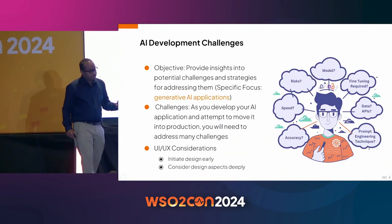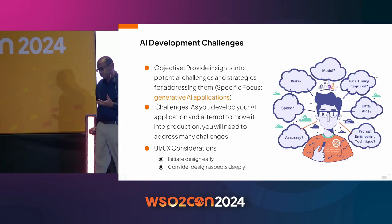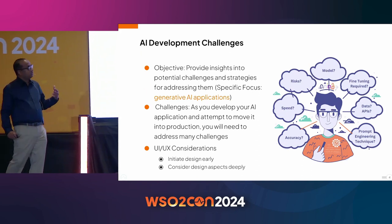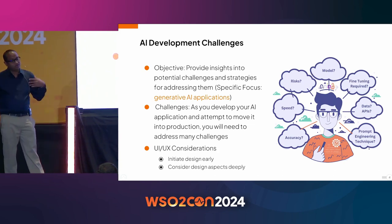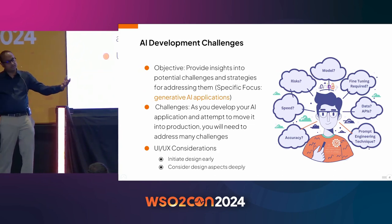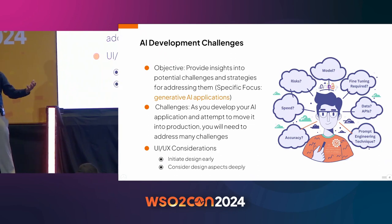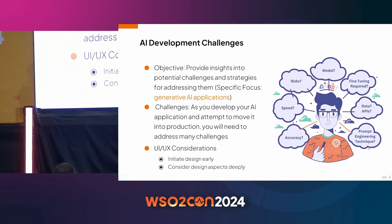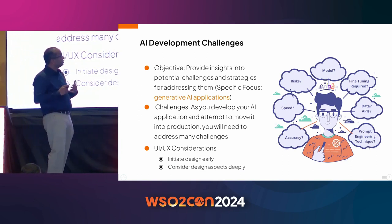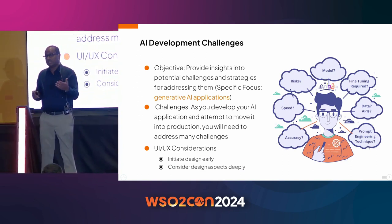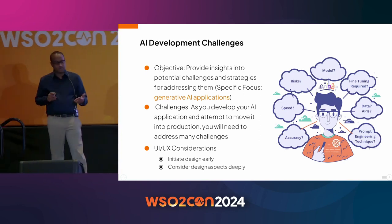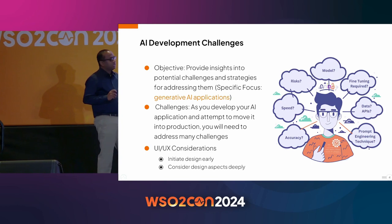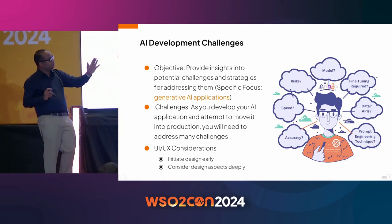As a developer or architect building a Gen AI application, there are various questions you will face. What is the model? This is different from the traditional path where you start with a dataset — here you have a base or pre-trained model. Do you need to fine-tune it? What is the data? APIs are very important because AI can interact with APIs to create new experiences — I'll talk about that in detail later.